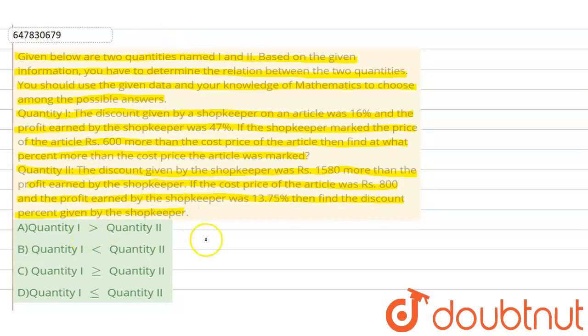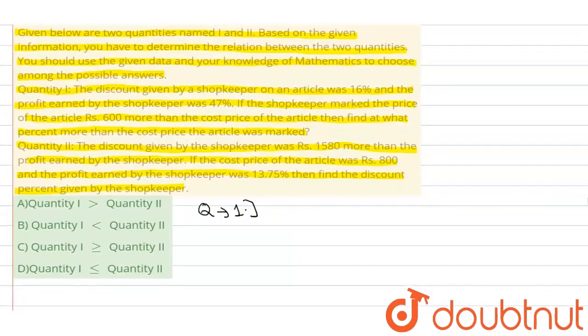Let's solve this question. First, we will work on Quantity I. In Quantity I, we need to find the markup percentage. So directly, we will write the ratio CP upon MP, that is cost price upon mark price.